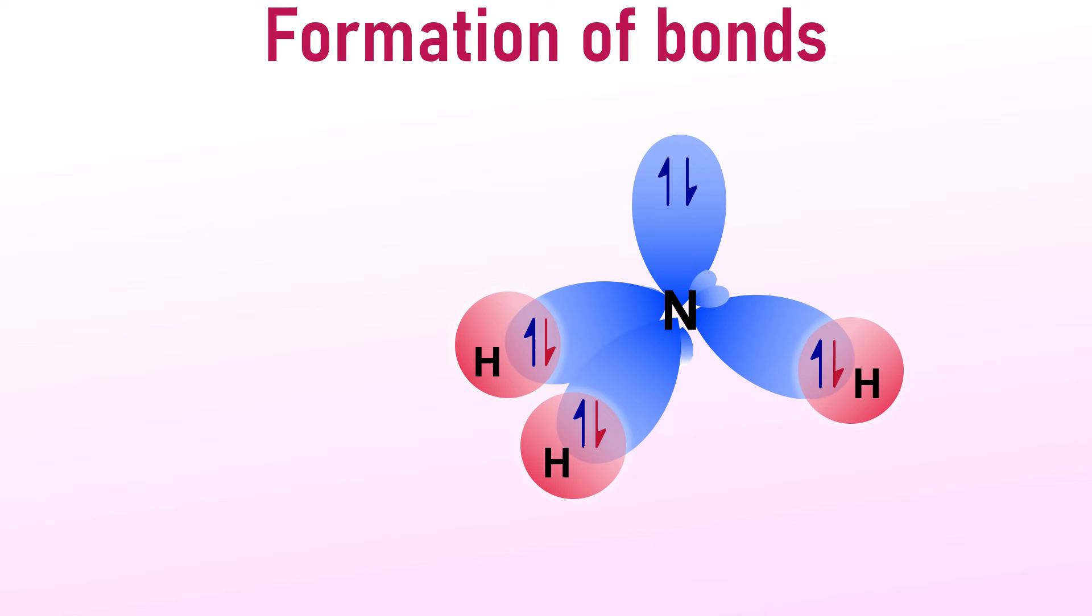This results in the creation of three sigma sp3-s bonds around the central nitrogen atom. It is also worth noting that sigma bonds are created when the overlapping of orbitals happens along the internuclear axis of the atoms involved in the bond formation.